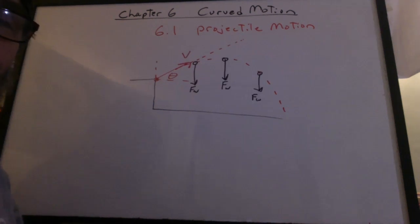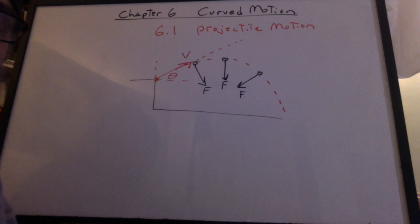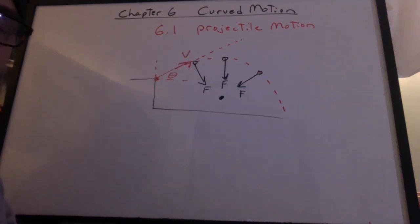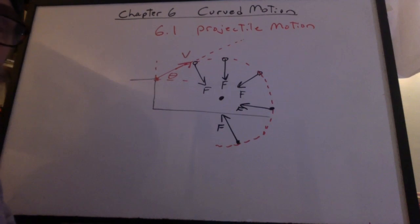Throughout the trajectory, the weight of the object pulled it down, causing the curve. So what would happen if we somehow could get the force to change in direction? Instead of always going down, it pointed towards the center of motion. It would just keep curving, forming a circle.